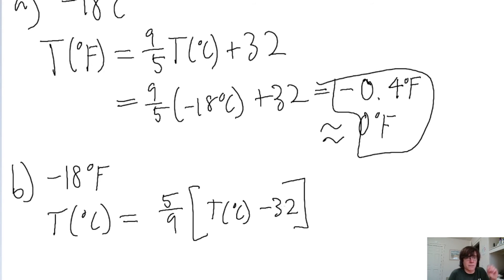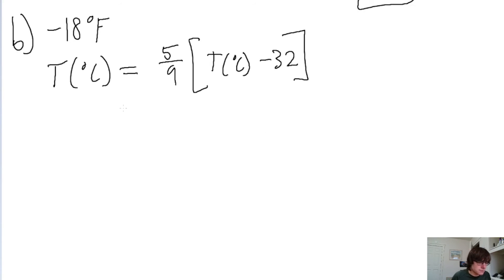So we subtract 32 from the Fahrenheit before we multiply by 5 ninths. So that's 5 ninths times negative 18 minus 32. So put that into a calculator and we get negative 27.78 degrees Celsius.